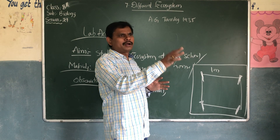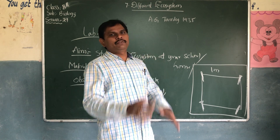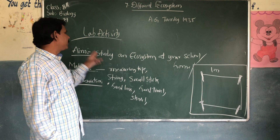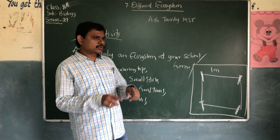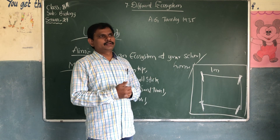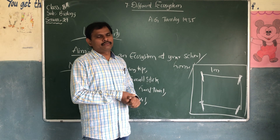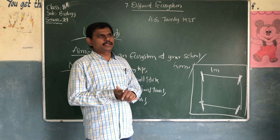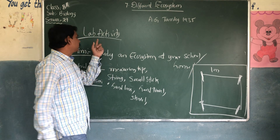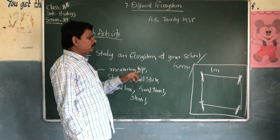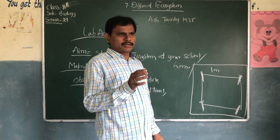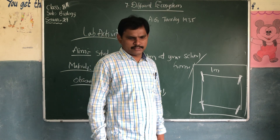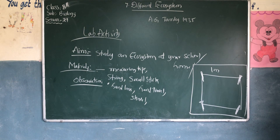It is not necessary to get the same organisms as others — there may be different types of organisms in your particular area. This is the lab activity: study an ecosystem at your school, home, garden, or in the fields. Observe what you find, write the names of the organisms, note whether they are living or non-living things, draw a small diagram, and submit it. This is your homework today. Thank you, students.